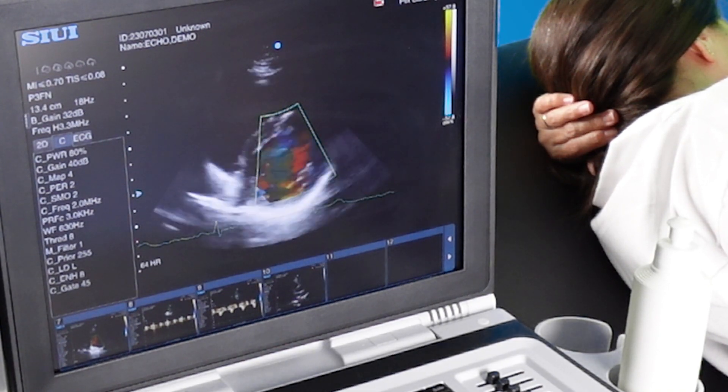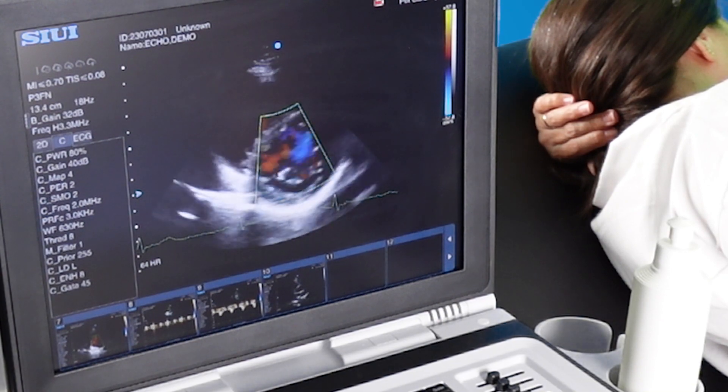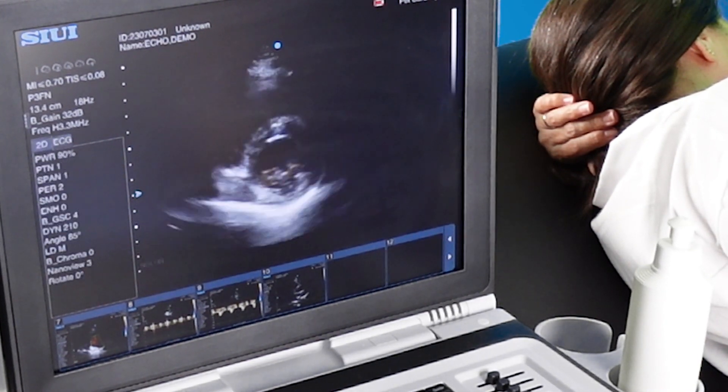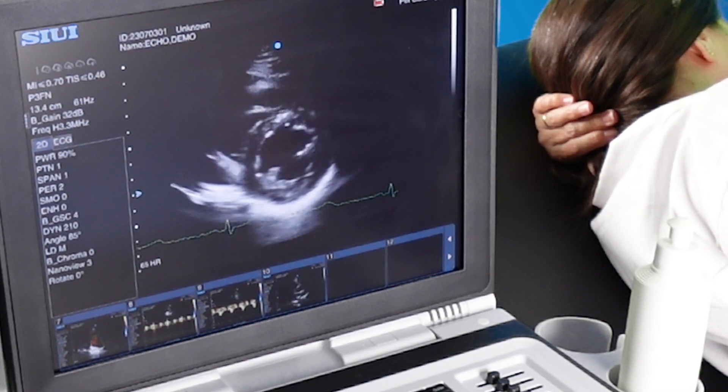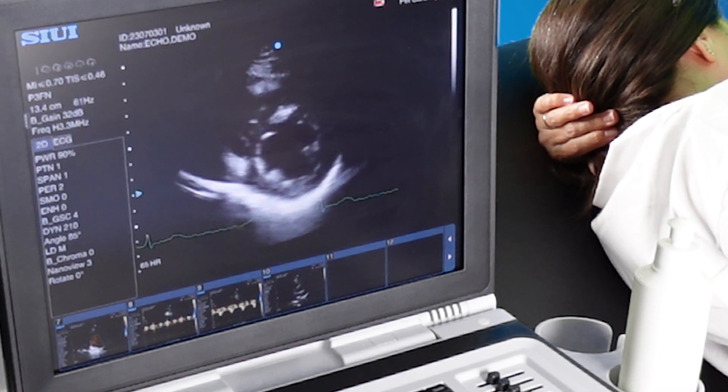We're now at papillary muscle level. This is a great view for checking for regional wall motion abnormalities.